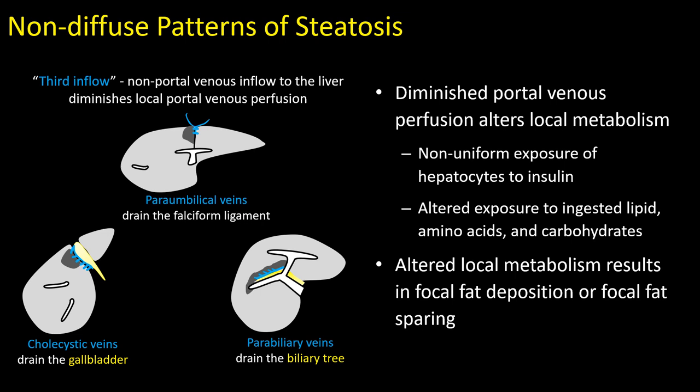The periumbilical veins drain the falciform ligament and anterior abdominal wall. The cholecystic veins drain the gallbladder, and the peribiliary veins drain the walls of the biliary tree. Each of these veins drains blood from that structure into the liver, locally substituting for portal venous blood flow. That local third inflow does not carry the same metabolic factors as portal vein blood — the gut and pancreas excrete proteins, amino acids, and various metabolic factors that portal blood delivers to hepatocytes, altering local metabolism.